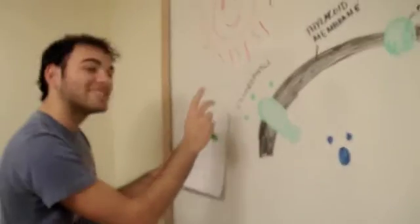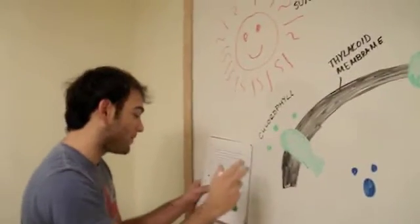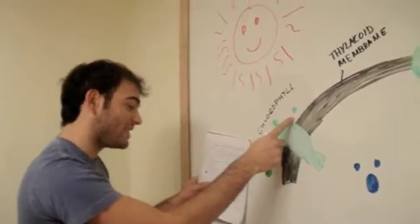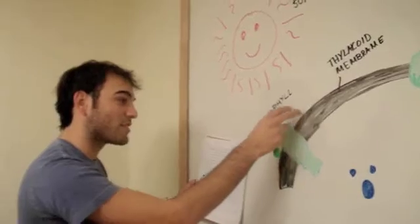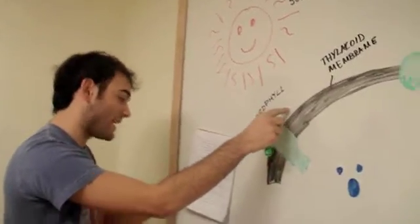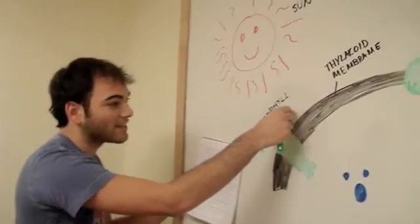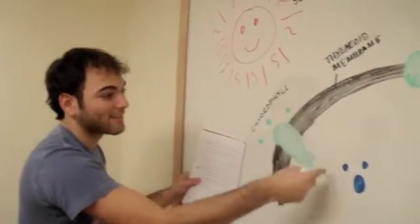Step number two. The photon causes the electron from this chlorophyll to spin out of orbit like this.